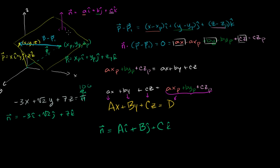What I want to do in this video is start with some point that's not on the plane. Let me draw a point right over here. The coordinates of that point are x sub 0, y sub 0, and z sub 0. Or it could be specified as a position vector — x0 i plus y0 j plus z0 k — which specifies this coordinate right over here.